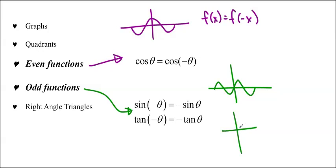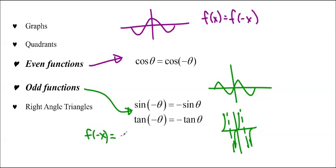Tan theta looks kind of like a cubic with asymptotes that continue onwards. You can see it has odd symmetry because it's mirrored in the diagonal. The definition of odd functions is f(negative x) equals negative f(x), so sine of negative theta equals negative sine theta, and tan of negative theta equals negative tan theta.